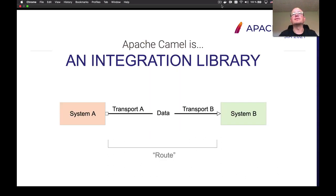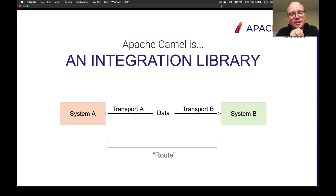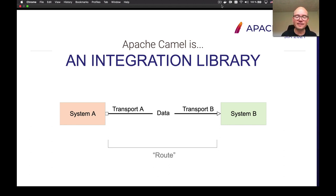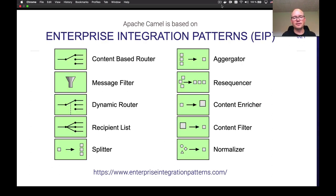What do you use Camel for? You use Camel for integration. Camel is an integration library or framework. When you have different systems that need to be integrated, those systems may use different transports and protocols, the structure of the data is different, and you need to convert the data, map it, transform it, route it in different ways, handle errors, do re-delivery and many other things. So it can quickly get out of hand — why not use Camel?